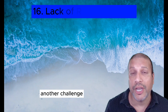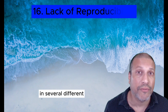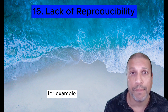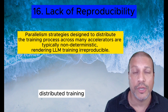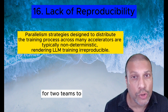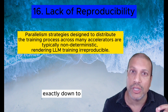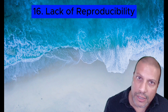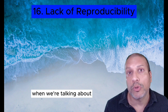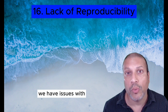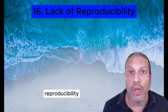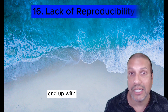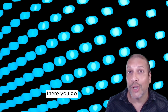Lack of reproducibility is another challenge that manifests in several ways. On the training side, there are many random seeds, especially in distributed training, making it very hard for two teams to reproduce the exact same individual weights of a large language model. This also happens with commercial APIs, where two people can give the exact same prompt under the exact same circumstances and end up with two different results.